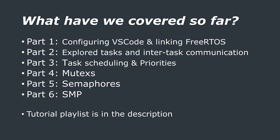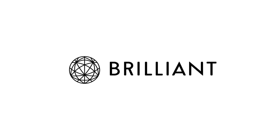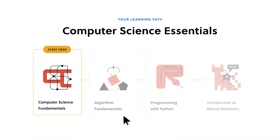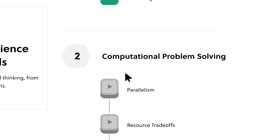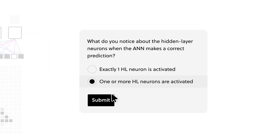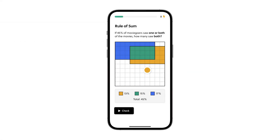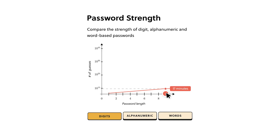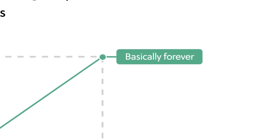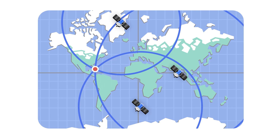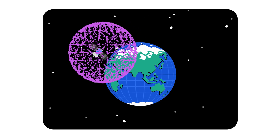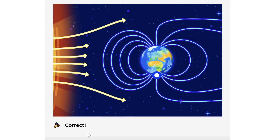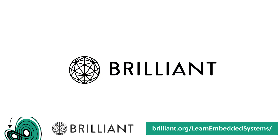If you're looking for a free, easy, and engaging way to learn more about computer science, look no further than this video's sponsor, Brilliant.org. Brilliant has thousands of lessons on topics like computer science, programming, engineering, and how everyday technology works. These interactive lessons can help you master complex topics in as little as 15 minutes per day on any device. My personal favourite course has been Brilliant's 'How Technology Works', which covers GPS and wireless communication. Go try everything Brilliant has to offer free for 30 days at brilliant.org/learnembeddedsystems. The first 200 to sign up get 20% off Brilliant's annual premium subscription.